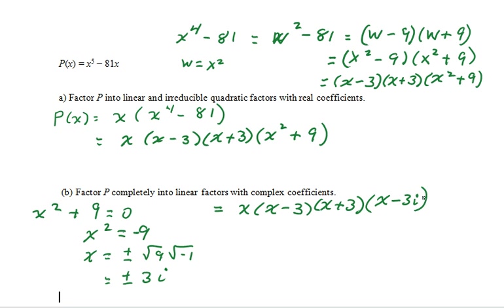Because the opposite of 3i is a zero, we'll have a factor, which is x minus negative 3i, which is x plus 3i.